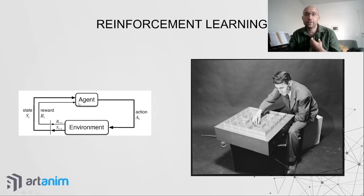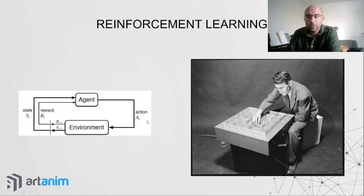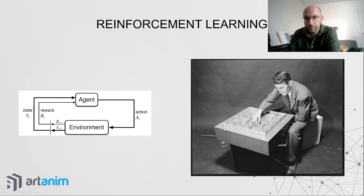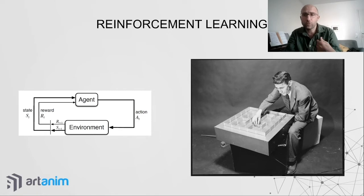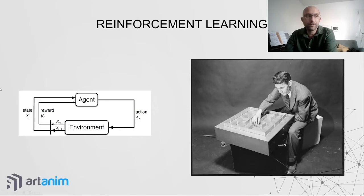The basic scheme is: the agent (the mouse, or in our case the controller that applies forces to the ragdoll) takes actions — move forward, backward, left, etc. The environment gives back a state (your new position, or you hit a wall) and a reward. The reward follows the carrot-and-stick principle: positive reward for doing what you want it to learn, negative reward for what you want it to avoid.